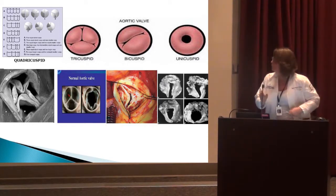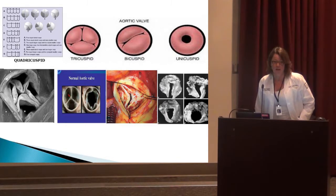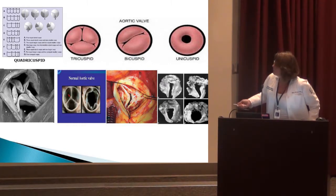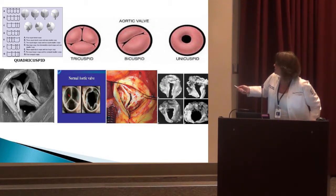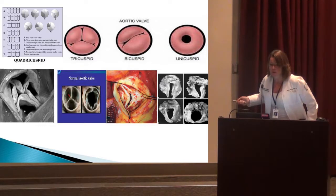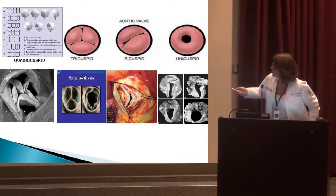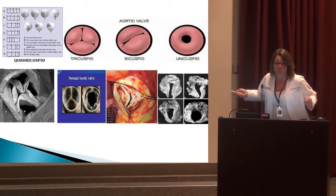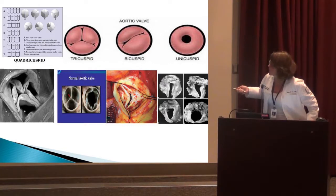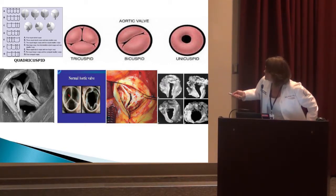When you look at the aortic valve, there are four different types that can possibly happen to a person. The most common one is the tricuspid valve — this is a cartoon depiction, the normal aortic valve. However, patients can be born with a unicuspid, a bicuspid, or very rarely a quadricuspid valve. Of those four valve types there are different variations; they classify them from A to G.